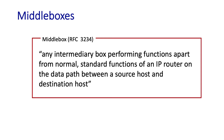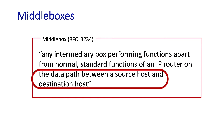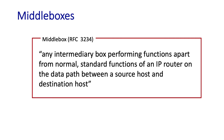RFC 3234 defines a middlebox as any intermediary box performing functions apart from the normal, standard functions of an IP router on the data path between a source host and a destination host. The standard functions of an IP router means destination-based forwarding of IP datagrams. And by this definition, a middlebox sits on the data path between hosts — it's a network layer data plane function occurring in the network core, as opposed to at an end host.